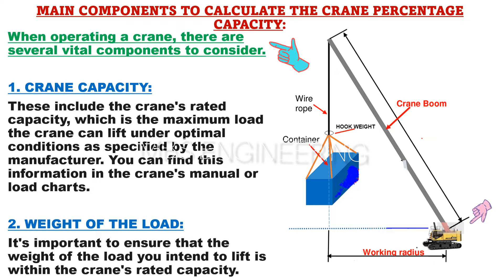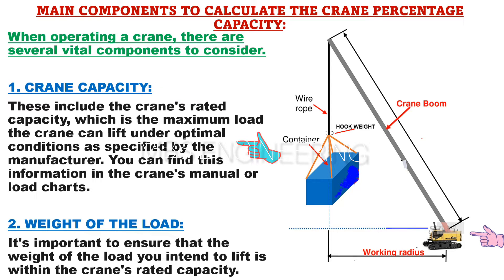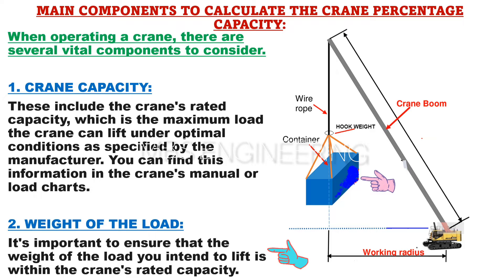There are several vital components to consider when operating a crane. The first component is crane capacity, which includes the crane's rated capacity — the maximum load the crane can lift under optimal conditions as specified by the manufacturer. You can find this information in the crane's manual or load charts. The second component is the weight of the load. It's important to ensure that the weight of the load you intend to lift is within the crane's rated capacity.